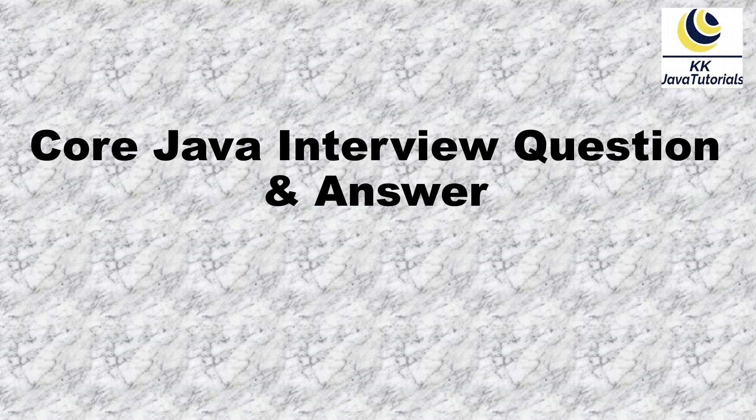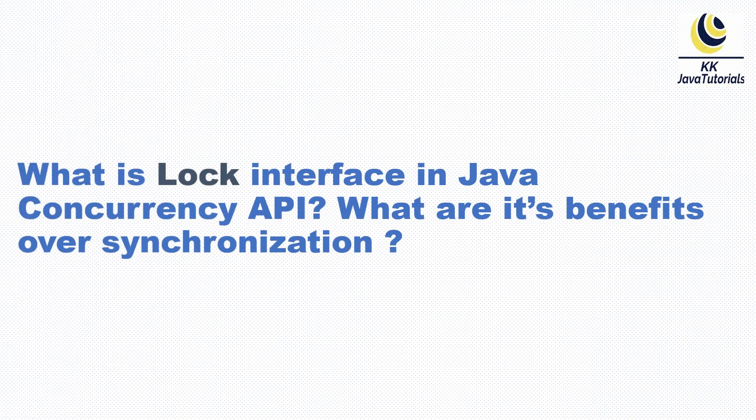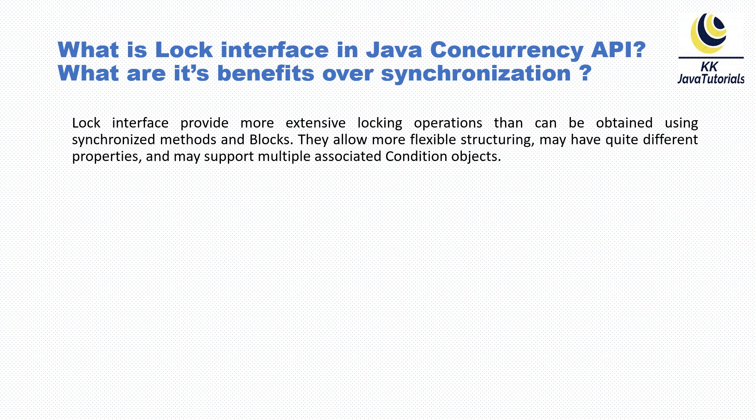In this video tutorial we are going to talk about one of the very important core Java multi-threaded interview questions. The question is: what is the Lock interface in the Java concurrency API, and what are its benefits over synchronization? The answer: the Lock interface provides more extensive locking operations than can be obtained using synchronized methods and blocks. They allow more flexible structures, may have quite different properties, and may support multiple associated condition objects.